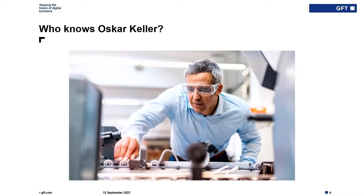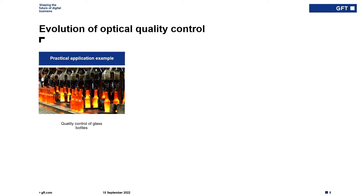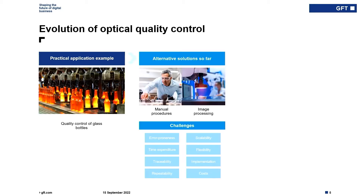It shows quite well how optical inspection started around 100 years ago. I took one example that's quite crucial these days — the manufacturing of glass bottles. There are two options to determine quality. One, you can do it manually: check the bottles when they're cooled down. But that's quite error-prone — after seven hours of work in production, you won't be detecting all the defects. It's time-consuming and traceability, which is crucial especially in the automotive sector, is hard to maintain.